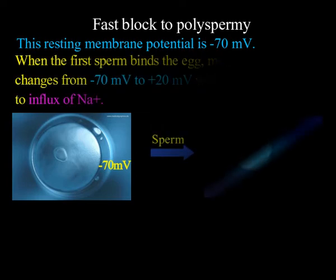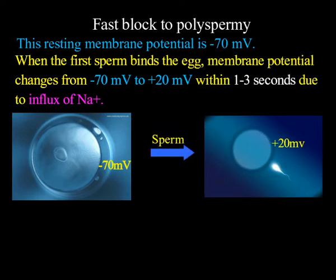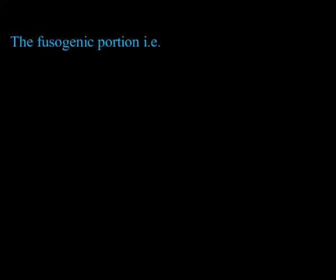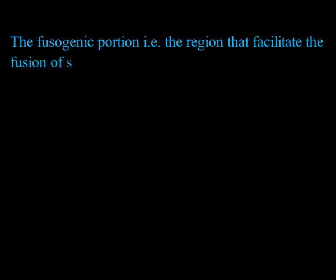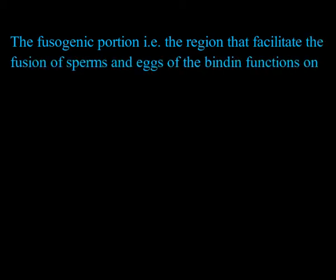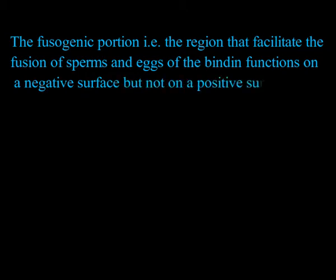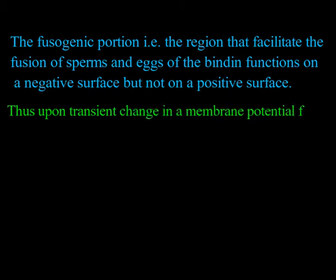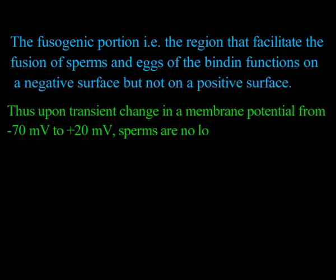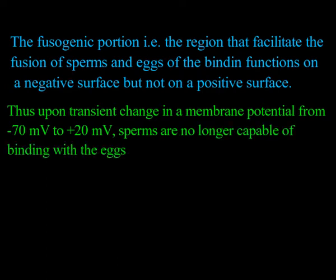When the first sperm binds with the egg, the membrane potential changes from minus 70 millivolts to plus 20 millivolts within one to three seconds, due to influx of sodium ions from sea water into the egg cytoplasm. The fusogenic portion, that is the region that facilitates the fusion of sperm and egg, functions on a negative surface but not on a positive surface. Thus, upon this transient change in membrane potential from minus 70 millivolts to plus 20 millivolts, sperms are no longer capable of binding with the egg, preventing polyspermia.